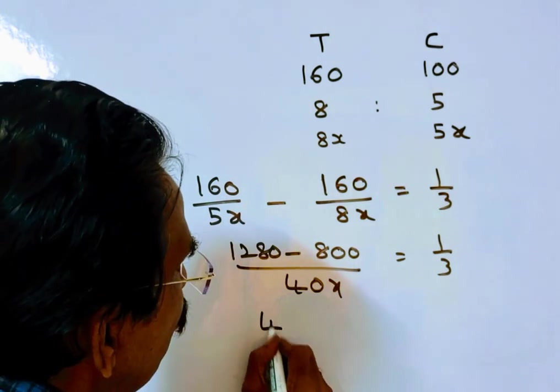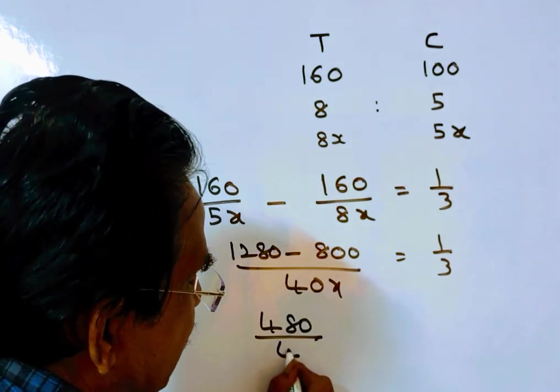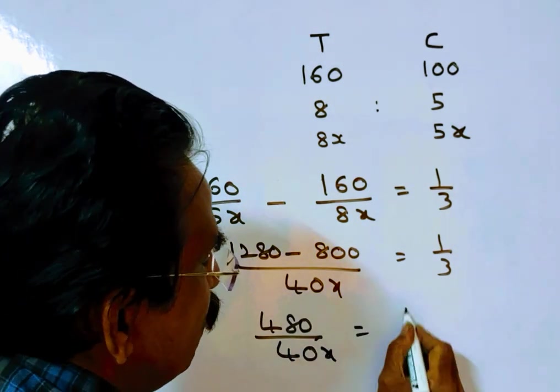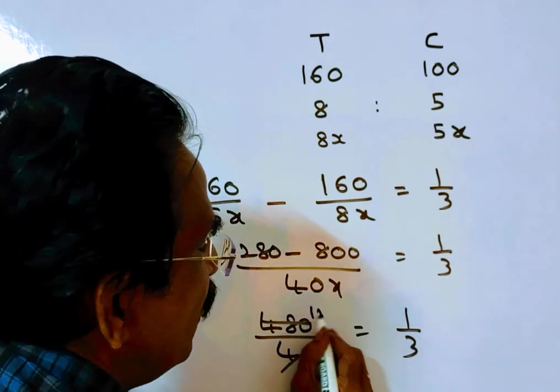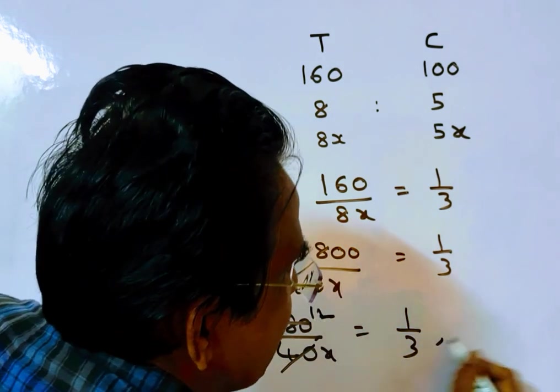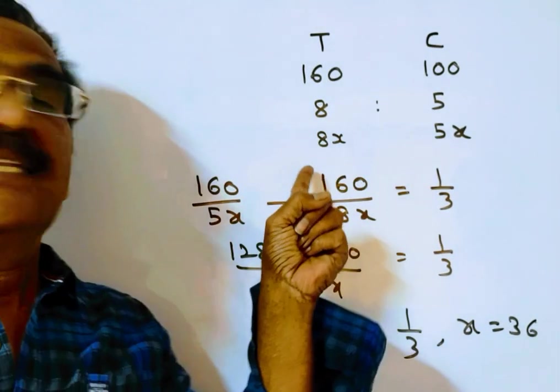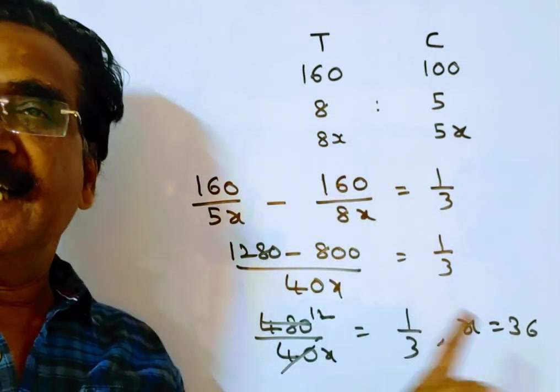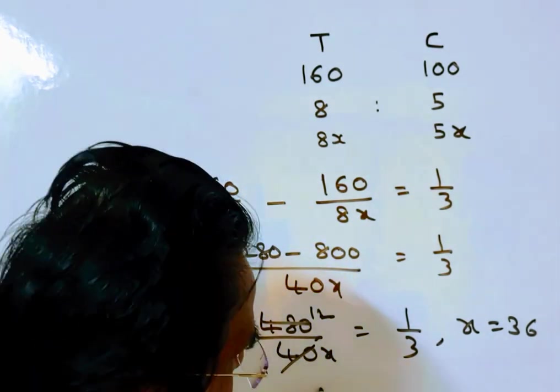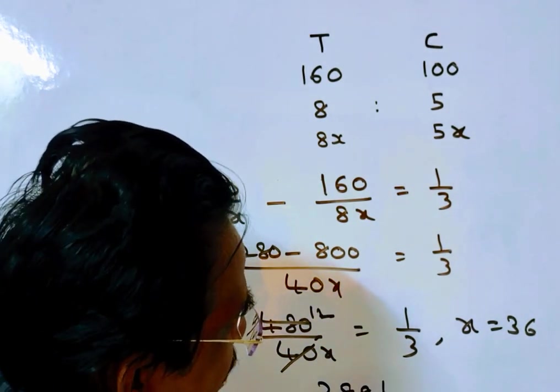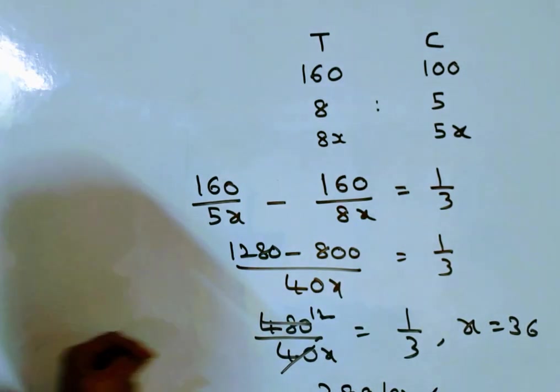480/40x equals 1/3. Cross multiplying: 40 times 12, and 12 times 3 is 36. So x equals 36. This implies the speed of the train is 8 times 36, which is 288 kmph, and the speed of the car is 5 times 36, which is 180 kmph.